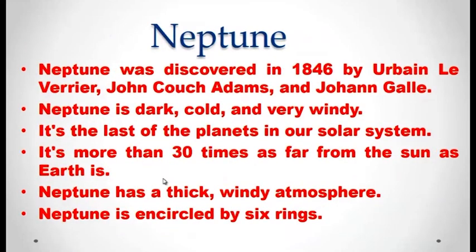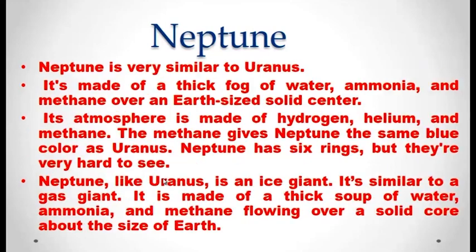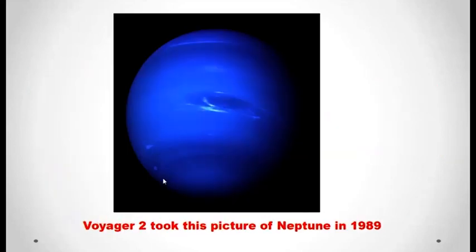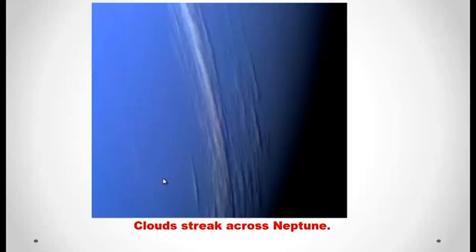The next planet in our solar system is Neptune, discovered in 1846. Neptune is dark, cold and very windy with a thick atmosphere. Neptune has six rings and is an ice giant. One day on Neptune is 16 hours, and one year in Neptune is 165 Earth years to go around the sun. This is the image of Neptune obtained by Voyager 2 spacecraft, showing cloud streaks across Neptune.